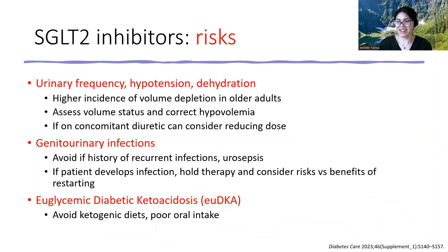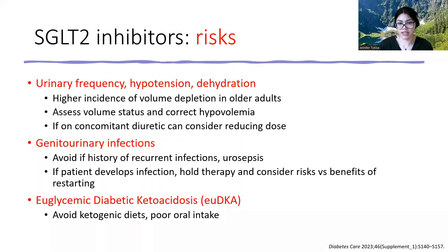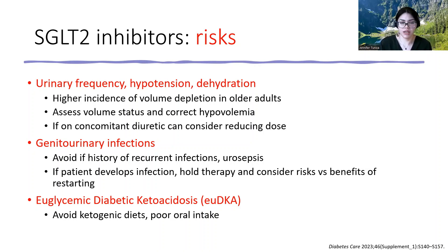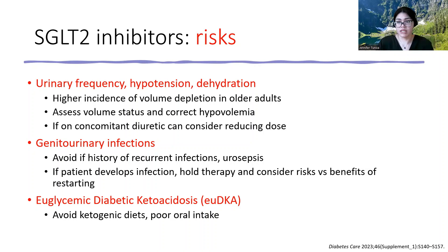There are risks I think hard about when assessing a patient. Since they make you pee sugar, they can increase urinary frequency — and a lot of our patients already have baseline urinary frequency or are incontinent. SGLT2 inhibitors can also lead to hypotension or dehydration, and there is a higher incidence of volume depletion in older adults. A clinical pearl is to assess volume status and correct for any hypovolemia at baseline — more pertinent for your heart failure patients. If they're on a loop diuretic and are euvolemic or running a little dry, consider reducing the diuretic dose to make room for the SGLT2 inhibitor.